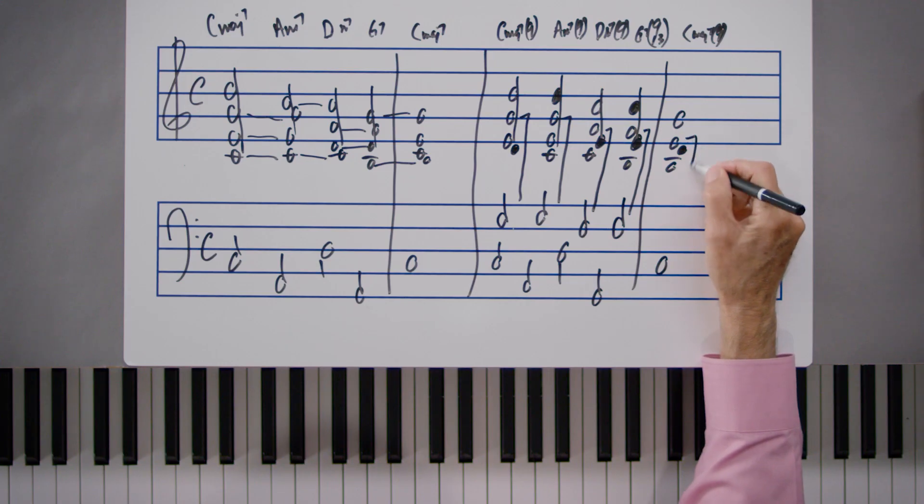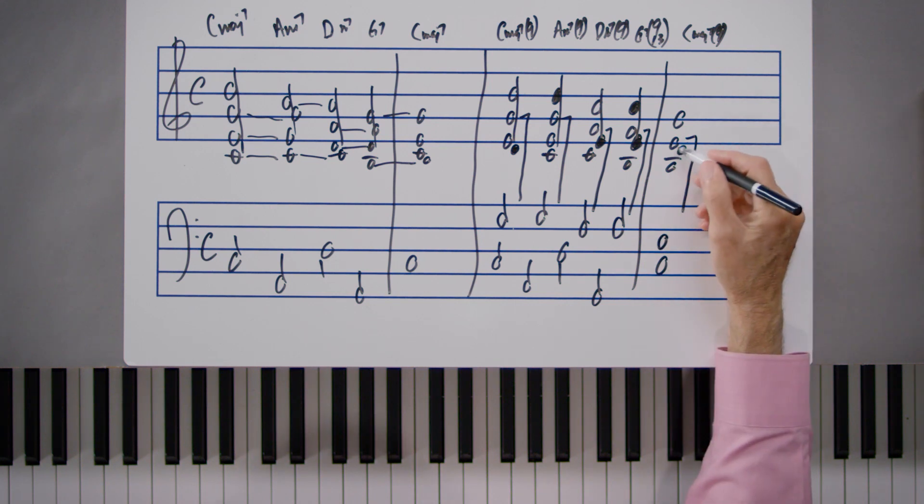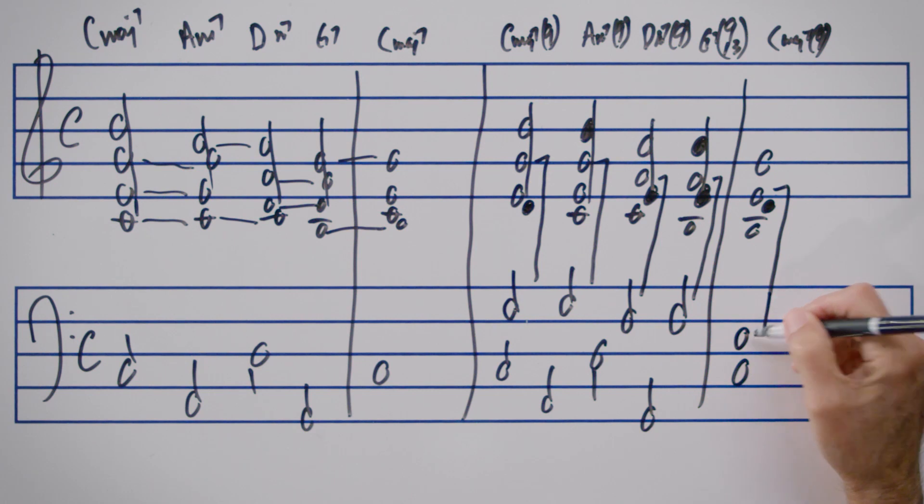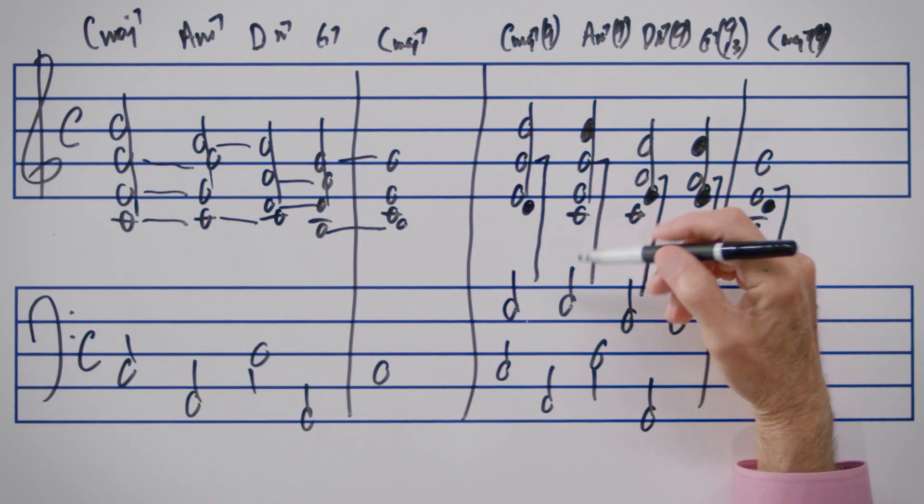On the C major 7, the note E is the dropped voice. So now we have drop 2 voicings of the same four chords, 1, 6, 2, 5, and 1, in drop 2 position, which is our open position.